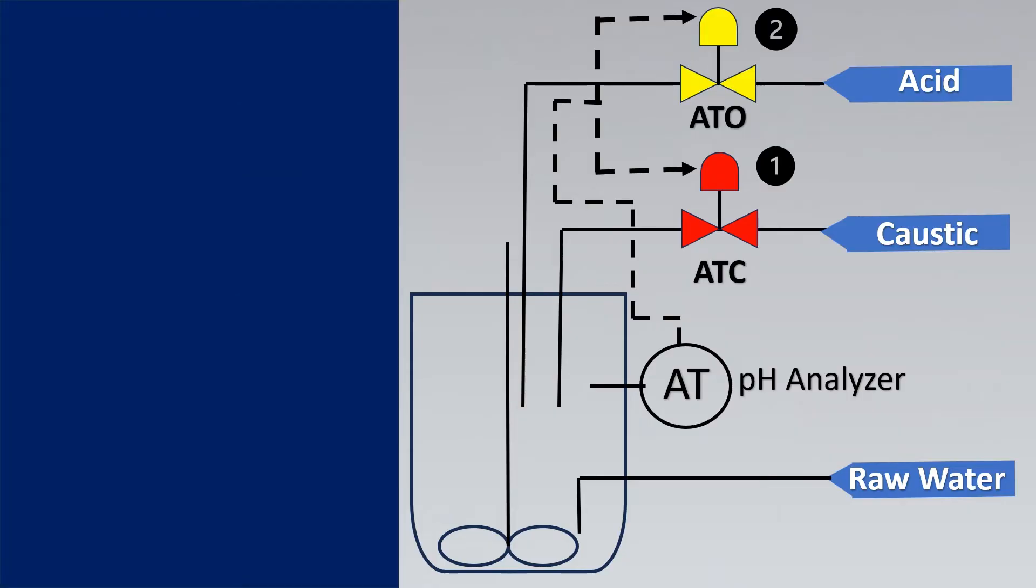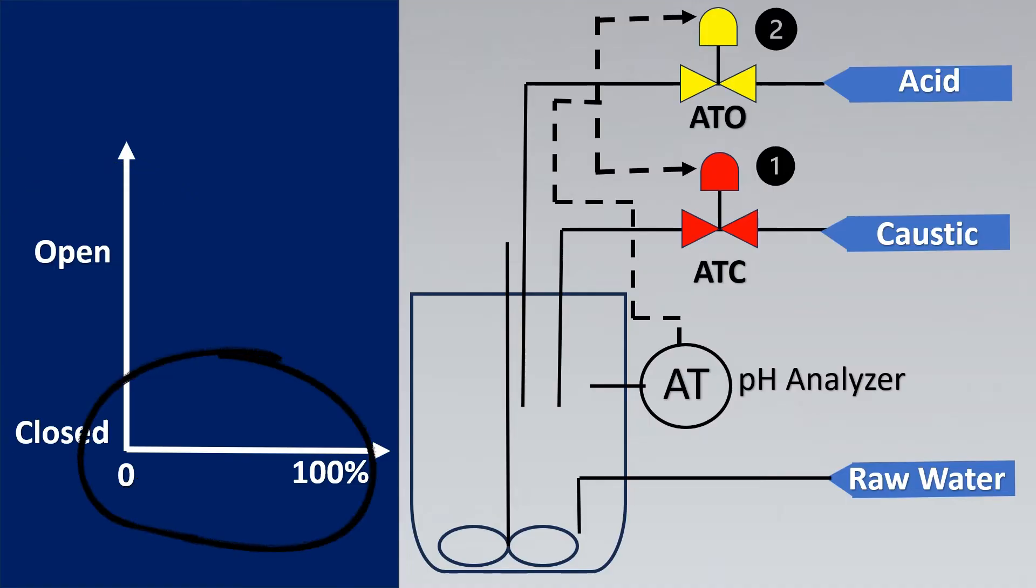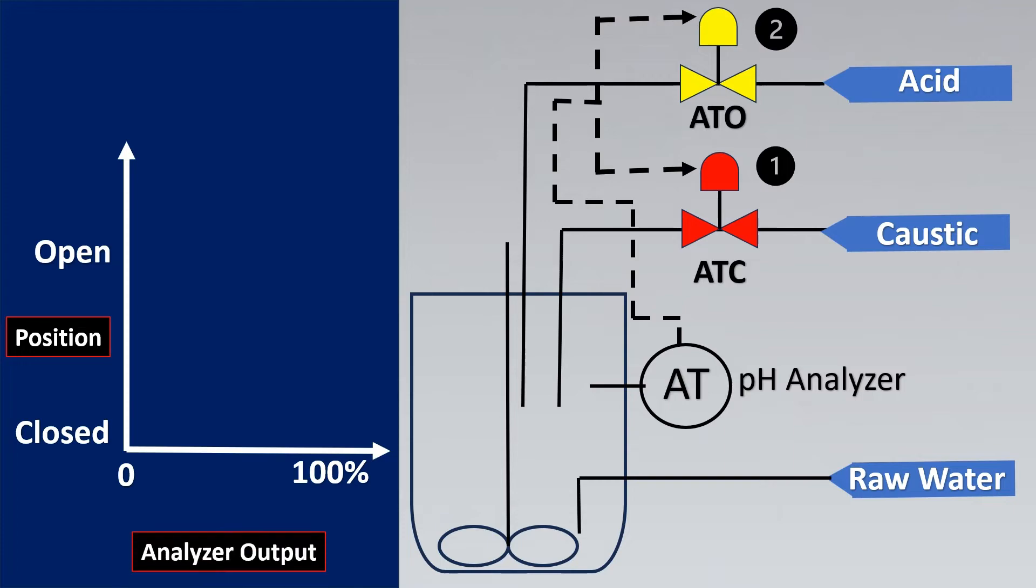Now let us look at a control system graph of what happens inside the magical control system. If you see here on the y-axis we will keep the valve position from close to open, and on the x-axis we will keep the analyzer transmitter output between 0 to 100 percent. So y-axis is having position, x-axis is having analyzer output between 4 to 20 mA for example.